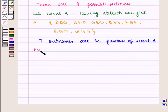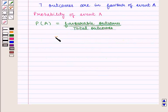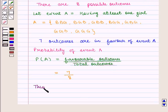So probability of event A, denoted by P of event A, will be given by favorable outcomes divided by total outcomes. And here we see that the number of favorable outcomes is seven and the number of total outcomes is eight. Thus we get the probability of event A as seven upon eight, which is the required answer.